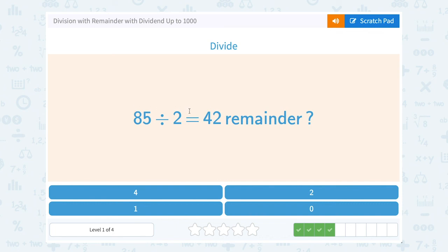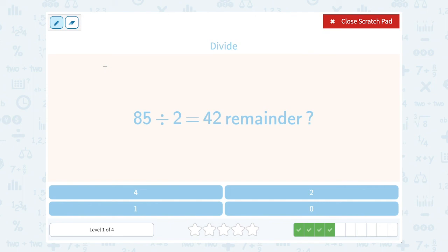85 divided by 2 equals 42 remainder what? Basically they're telling us if we divide 85 divided by 2 we're going to get 42, but we want to see if there's a remainder. Well, what's 42 times 2? 42 times 2 is 84.